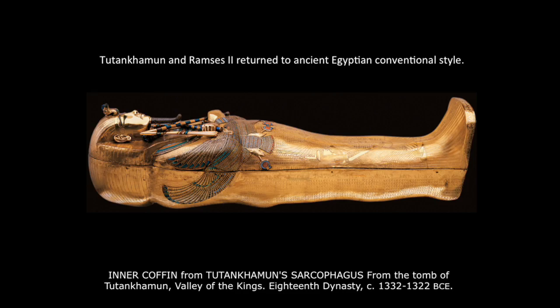Tutankhamun and Ramses II returned to ancient Egyptian conventional style. Discovered in 1922 by Howard Carter, a British Egyptologist, Tut's tomb was never robbed — which is why it's left such a mark on us — though he only lived to be 19 and wasn't a major pharaoh.